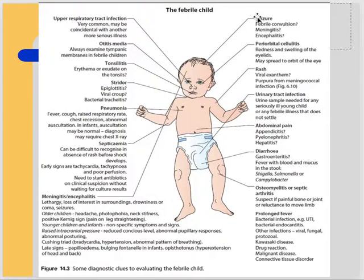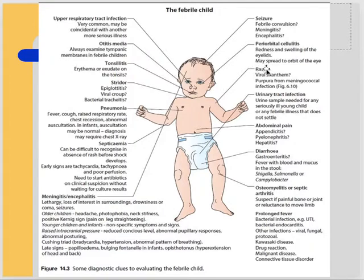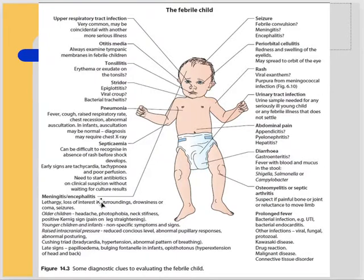With seizures, think about febrile convulsions, meningitis, and encephalitis. A child may have periorbital cellulitis - infection around the eye that can involve the eye itself. A child may present with a rash: rashes can be viral, from viruses like chickenpox, measles, erythema infectiosum, or from meningococcal infection as discussed.